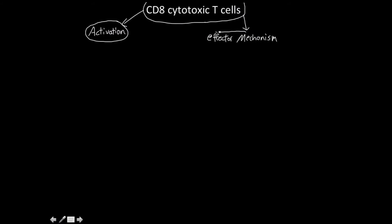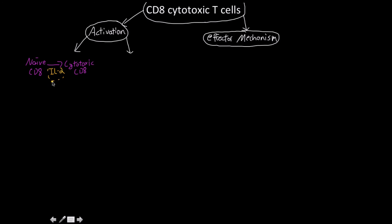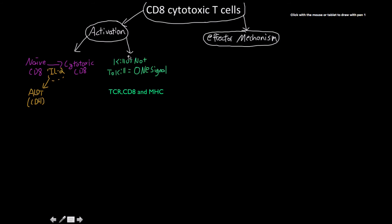To summarize: the cytotoxic T cell's activation relies heavily on large amounts of interleukin-2, usually with the help of a CD4 T cell. The decision of whether to kill one of your own cells is based off of one single signal. Reviewing natural killer cell mechanisms will help illustrate why this single-signal decision is so remarkable.